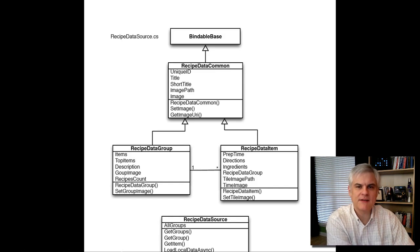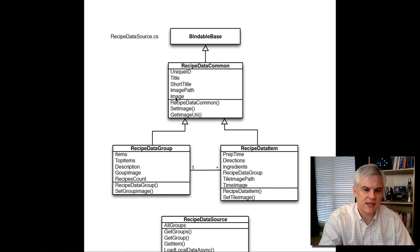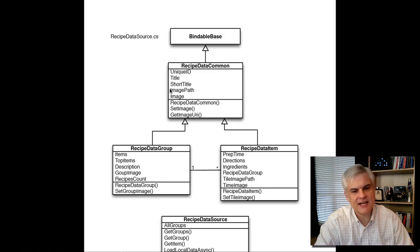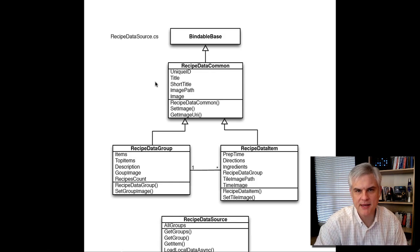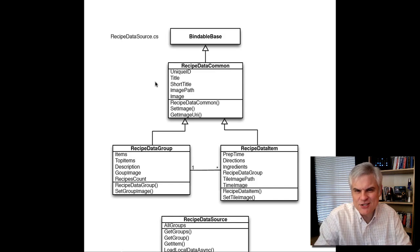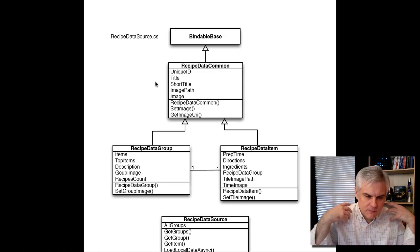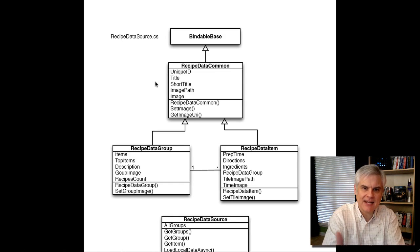So first of all, you remember we left off at this diagram in the previous lesson, and we saw the inheritance hierarchy. This class inherits from this class, which inherits from BindableBase, right? And we never really answered the question: what does BindableBase do? Why is it there? What action is it performing or function, or what's been delegated? What responsibilities does it have?